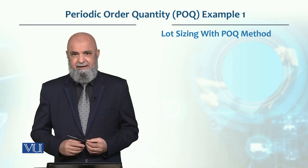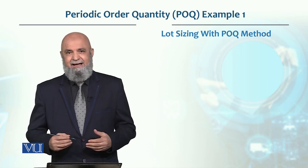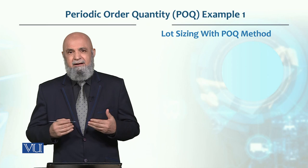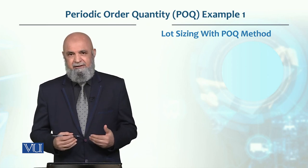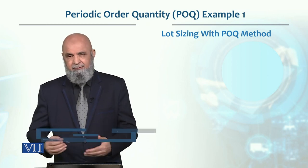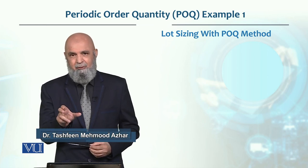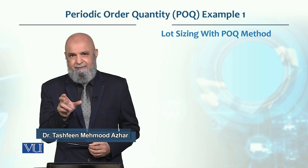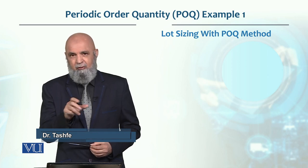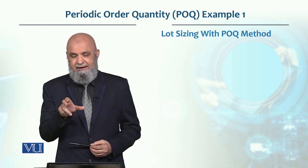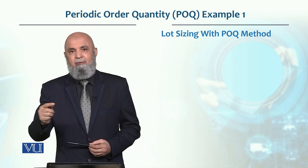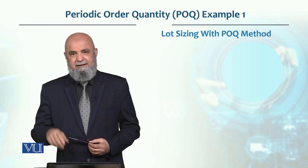Basically, what we do is calculate and determine the time between orders. If the time between orders is two weeks, then every second week we will place an order for the required quantity.